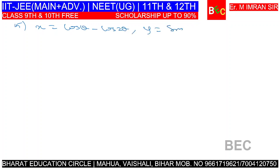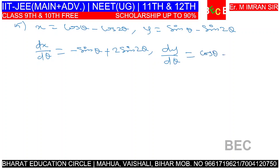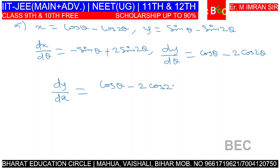Question number 5: x = cos θ − cos 2θ, y = sin θ − sin 2θ. Differentiating: dx/dθ = −sin θ + 2·sin 2θ. dy/dθ = cos θ − 2·cos 2θ. Dividing both: dy/dx = (cos θ − 2·cos 2θ) / (2·sin 2θ − sin θ).